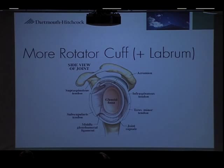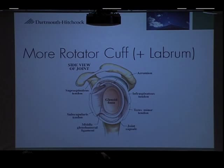Looking straight on from the front, you can see how the muscles cuff around the glenoid fossa — that's the actual joint surface. They cuff around from different directions, and hence the name 'rotator cuff.' They all have a role to play, each wrapping around from a different angle.